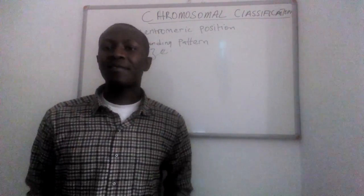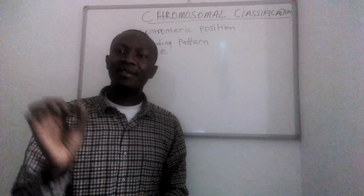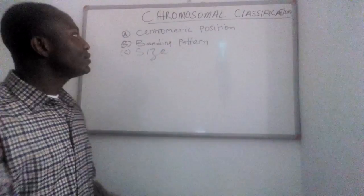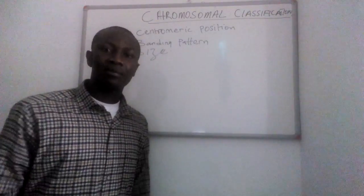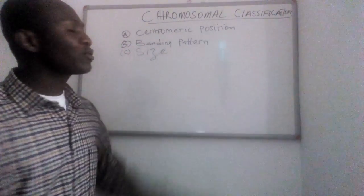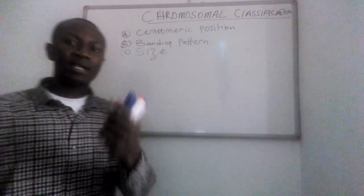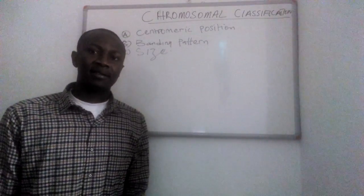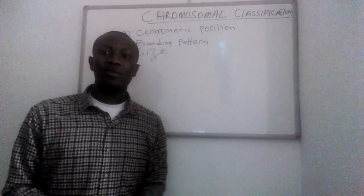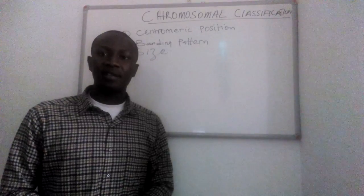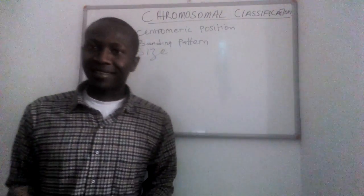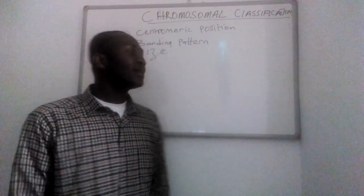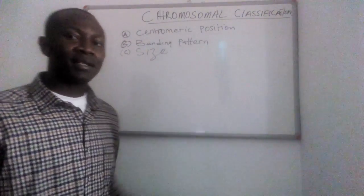Today we are going to look at how we classify chromosomes and what criteria we use. We use three main criteria to classify chromosomes. The first one is the centromeric position. The second one is the banding patterns. The third one is the size of the chromosomes, because chromosomes are of different sizes. Today we will start with the centromeric positions, and in subsequent videos we will look at banding pattern and size.